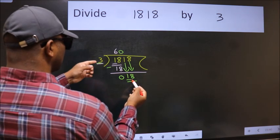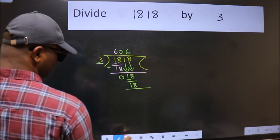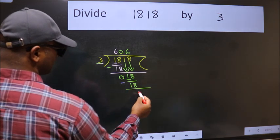When do we get 18 in 3 table? 3, 6, 18. Now we subtract. We get 0.